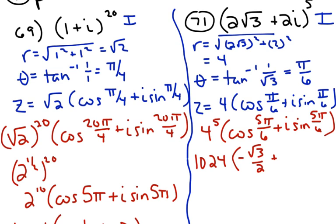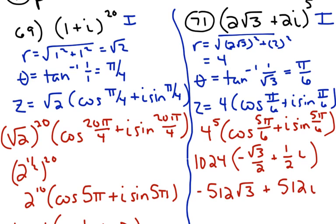The sine of 5pi/6 is going to be positive 1/2. Don't forget your i. Now I'm going to distribute the 1024. I'm going to get negative 512√3, because 1024 divided by 2 is 512, plus 512i. And that's all that I can do with that answer.